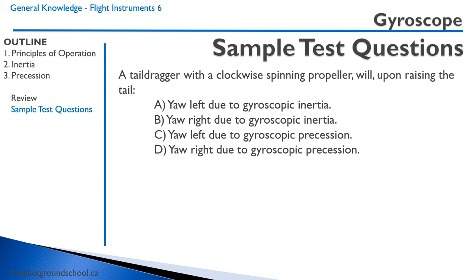Remember, gyroscopic inertia resists a change, so we can eliminate the first two options involving gyroscopic inertia. With gyroscopic precession, when a force acts on a gyroscope — the propeller acts like a gyroscope, spinning clockwise, moving the aircraft forward. When we raise the tail, it's the same as the force being applied at the top of the propeller going forward.